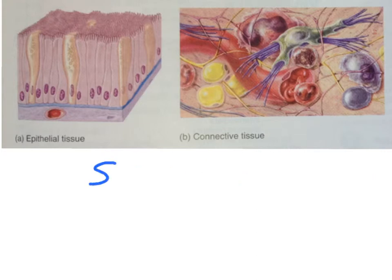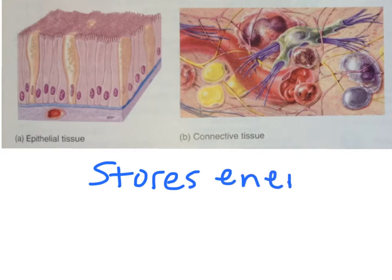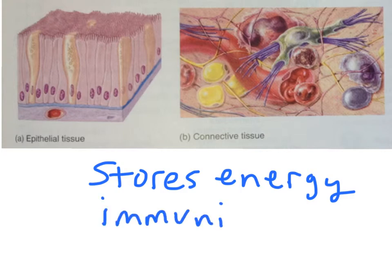Connective tissue also stores energy in the form of fat, and through the blood is the home of the immune system, which defends the body against pathogens — organisms like bacteria and parasites that cause disease.